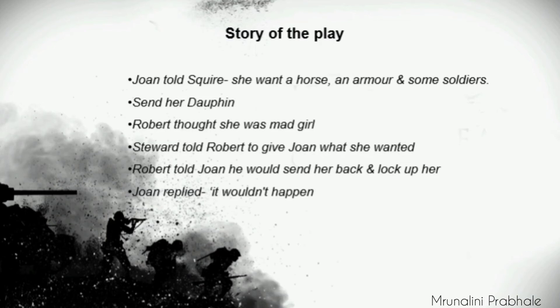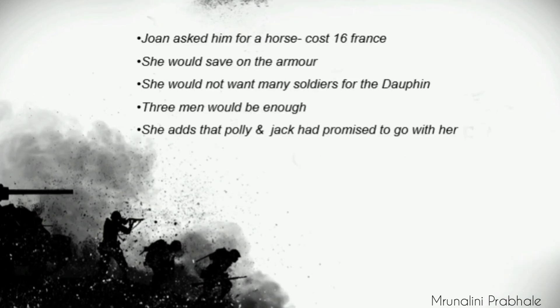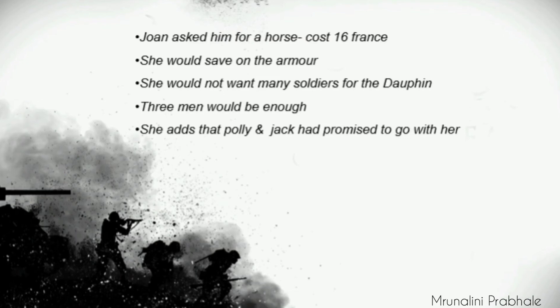Joan replied that it wouldn't happen - that is why Robert had not wanted to see her, yet she had managed to see him. Joan then asked him for a horse which would cost 16 francs. It was a big amount of money, but she would save on armor as she did not need a beautiful fitting armor - a soldier's armor would do. She said she would not need many soldiers, for the Dauphin would give her what she needed to free Orleans. Three months would be enough, and she added that Polly and Jack had promised to go with her.